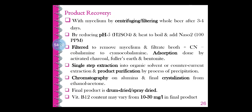For the separation stage, DSP parameters include filtration, sedimentation, and centrifugation. Centrifugation is carried out using laboratory centrifuges — small table centrifuge, high-speed refrigerated centrifuge, and ultracentrifuge — or industrial/sedimentation centrifuges — decanter, disc stack, and tubular centrifuge. The concentration stage involves evaporation, precipitation, and extraction.